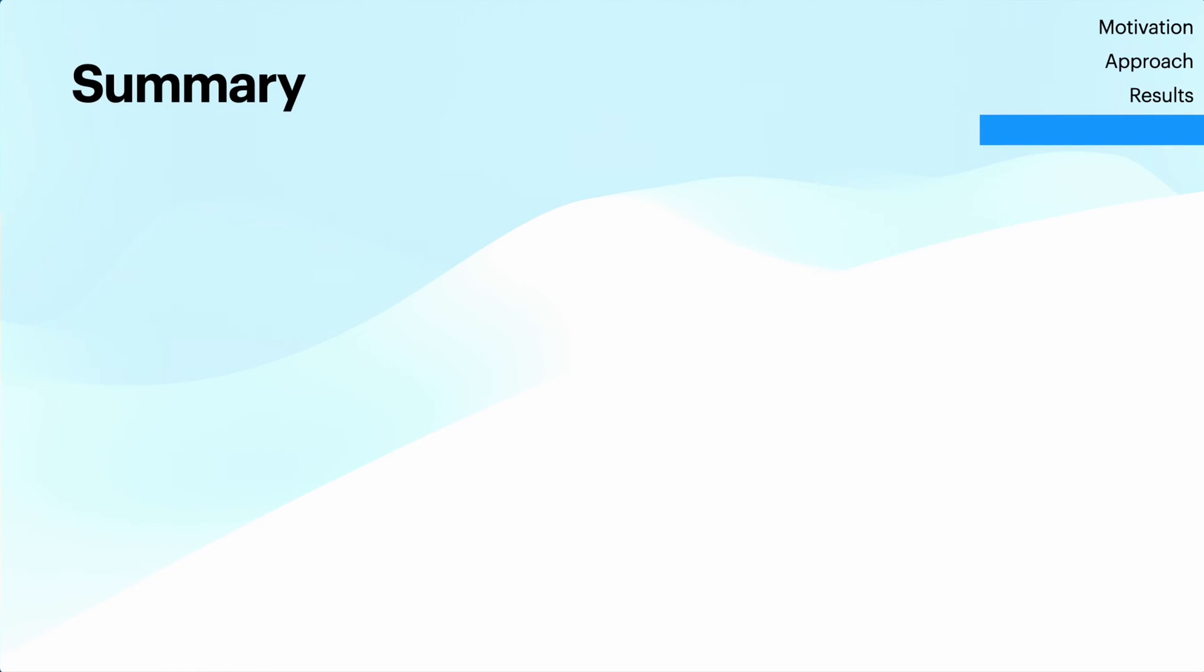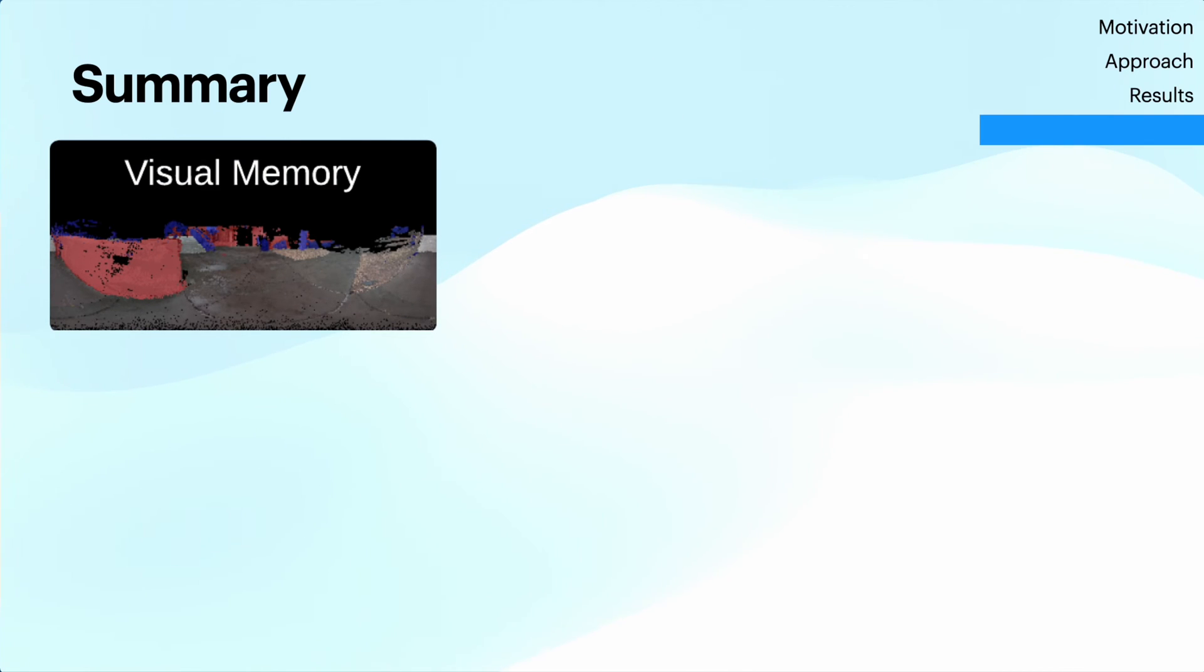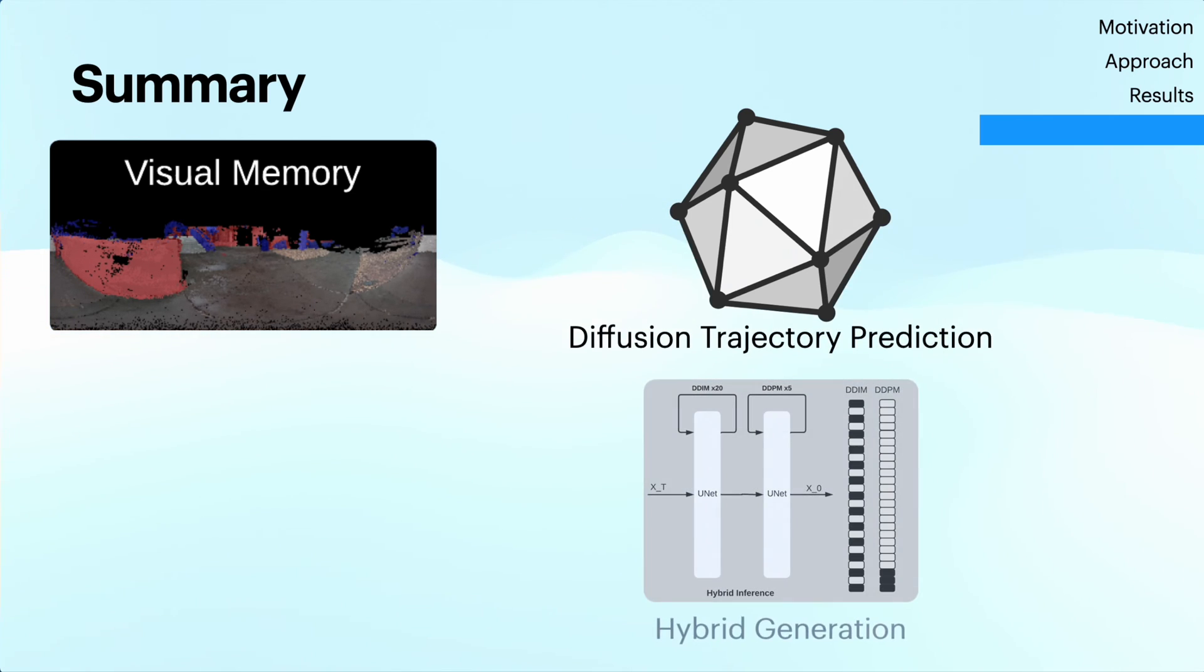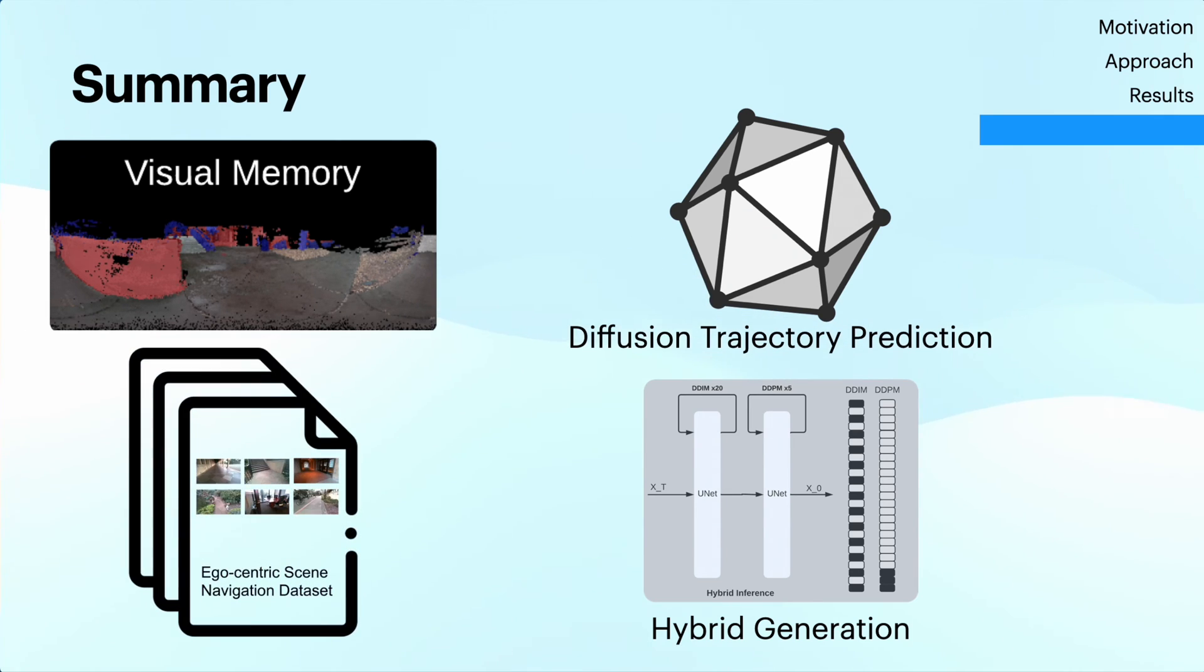To recap, in this work we've presented a novel compact representation of visual memory critical to navigation tasks, a diffusion-based generative model that predicts the distribution of future trajectories, a hybrid generation technique that speeds up generation by 30 times with minimal loss of quality, and open-sourced a large-scale egomotion dataset of egocentric videos paired with IMU information in outdoor and indoor settings.